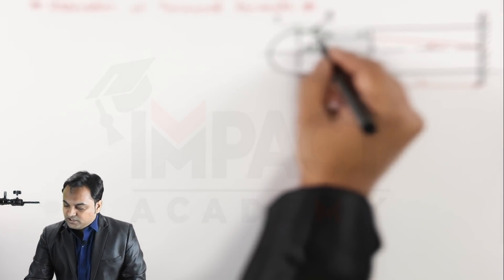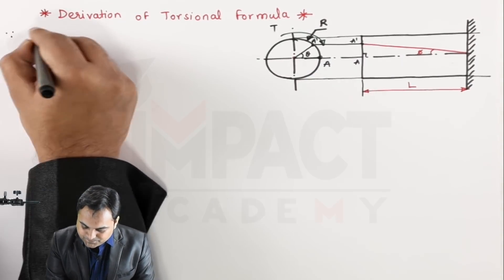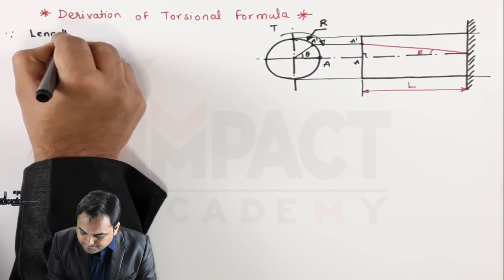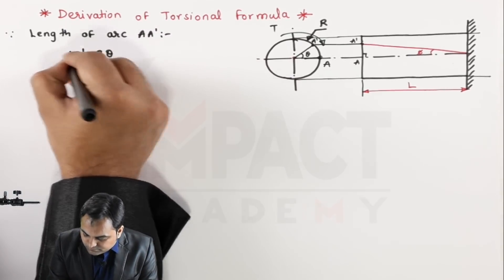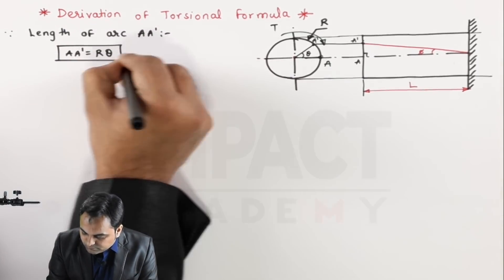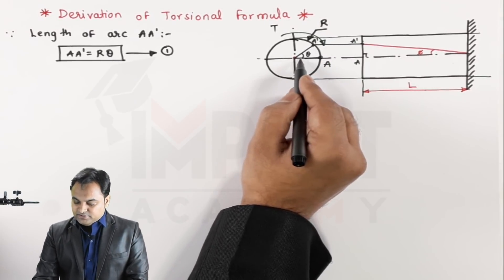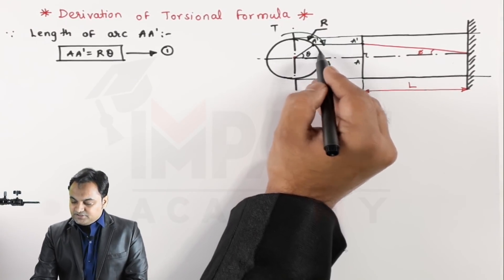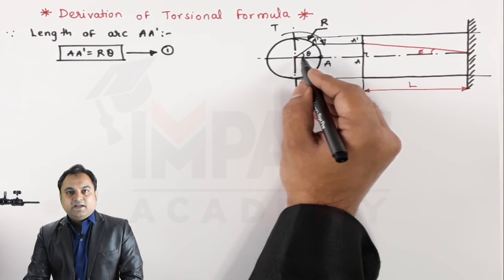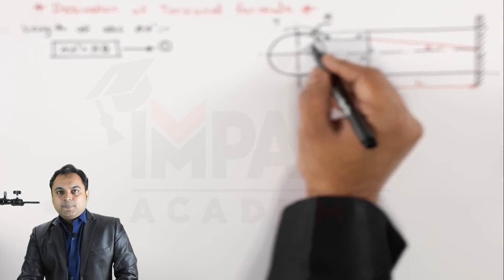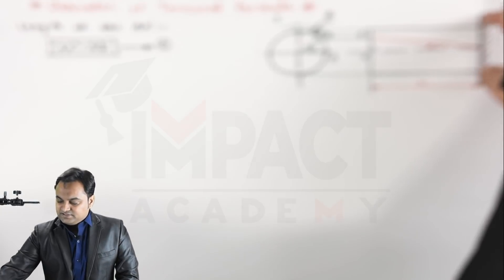The first part is finding the length of the arc A–A dash. Since the arc length equals radius into theta, we have A–A dash equals capital R multiplied by theta.